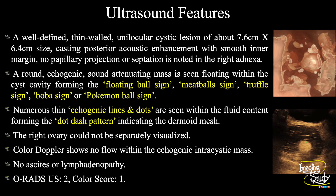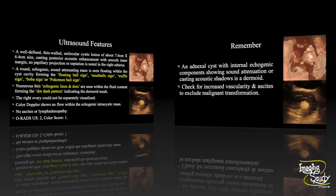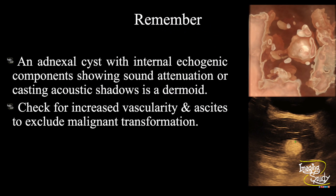If you want to apply IOTA O-RADS scoring, it will be scored as IOTA O-RADS US 2 and color score of 1. Now the take-home message: an adnexal cyst with internal echogenic components showing sound attenuation or casting posterior acoustic shadow is a dermoid until proven otherwise. Don't forget to check the vascularity and peritoneal fluid collection — if you see increased vascularity with ascites, it may be a case of malignant transformation, which is more common in younger patients.